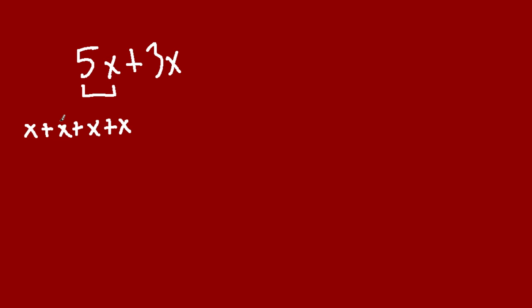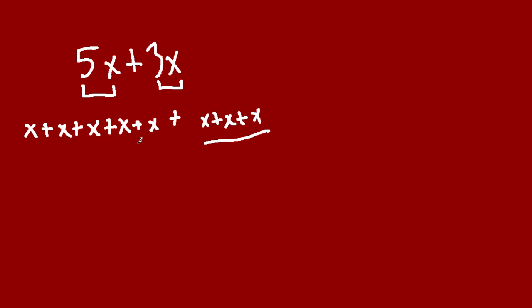In other words, 5 x's. And likewise, you can think of 3x as another 1, 2, 3 x's, and we're adding both of them. So really we have 3 and 5 x's, and now we have 8 x's.